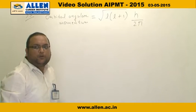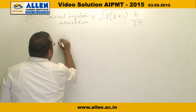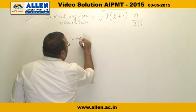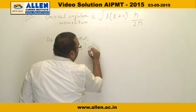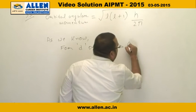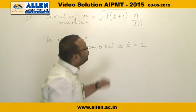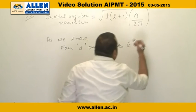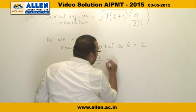For d orbital, the value of azimuthal quantum number l is equal to 2, and the value of h upon 2π is equal to ℏ (h-bar).